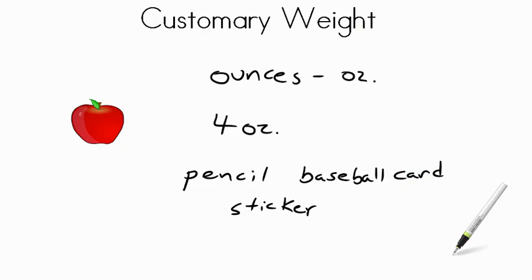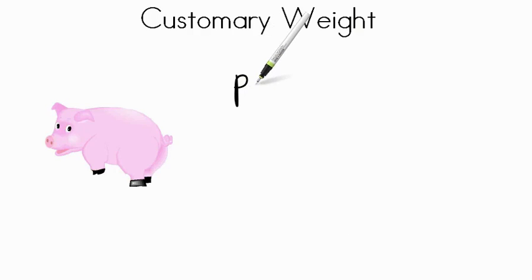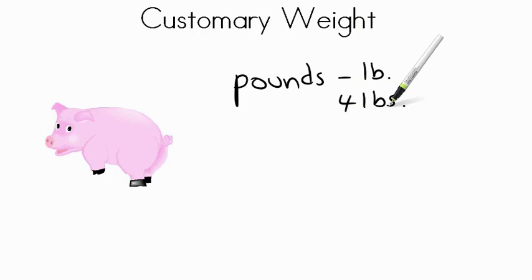Next let's take a look at pounds. Pounds are used for larger amounts of weight. The abbreviation for pound is LB. If it's plural, more than one, it's LBS. So one pound but four pounds, LBS. Now, 16 ounces equals one pound. So you can see that a pound already is much larger than an ounce.